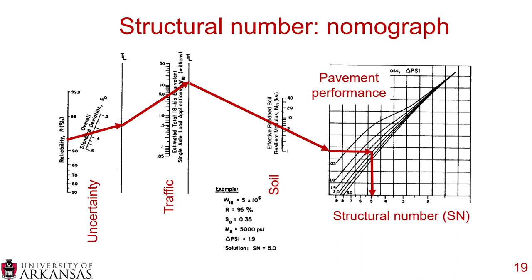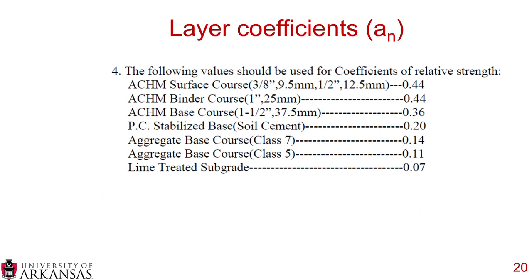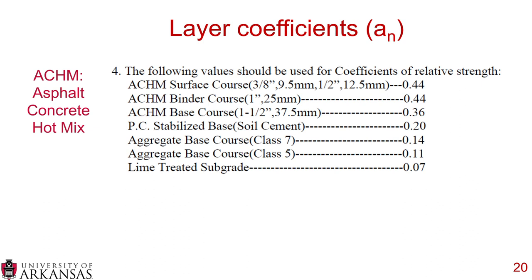On the right side of the equation, we have layer coefficients and thicknesses. These are layer coefficients from the Arkansas Department of Transportation. The surface course — ACHM, asphalt concrete hot mix — has a coefficient of 0.44 for 9.5 or 12.5 mm nominal maximum aggregate size. The binder course at 25 mm is also 0.44. The base course at 37.5 mm drops to 0.36. Stabilized base is 0.2, base courses are 0.14 or 0.11, and lime treated subgrade is 0.07.